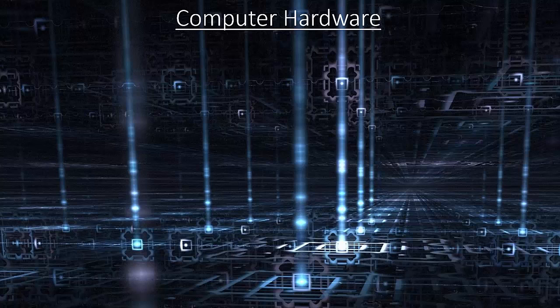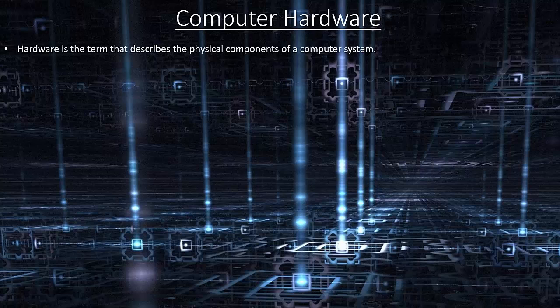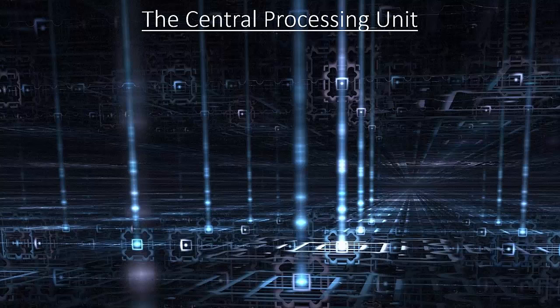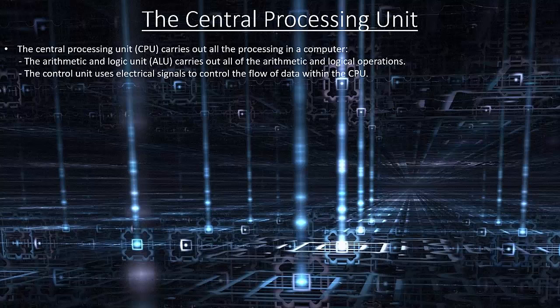Computer hardware. Hardware is the term that describes the physical components of a computer system. Hardware components include input, output, storage and processing devices. The central processing unit carries out all the processing in a computer. The arithmetic and logic unit carries out all of the arithmetic and logical operations. The control unit uses electrical signals to control the flow of data within the CPU.